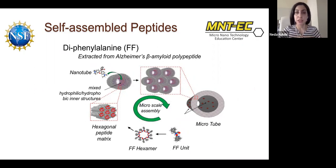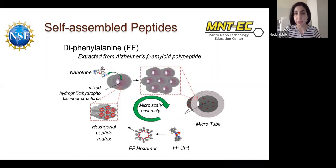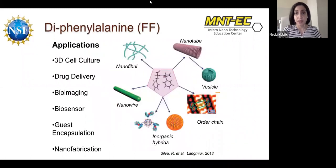This is a completely spontaneous process. These peptides can make nanotubes and microtubes through a complete self-assembling process. The role of intermolecular interaction in this self-assembly process is a very interesting idea to teach students. As you can see in this picture, these peptides can make nanotubes, spherical particles, nanowires, and nanofibers.